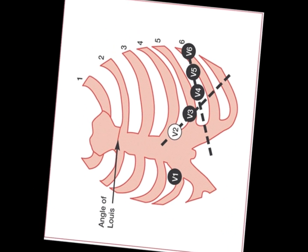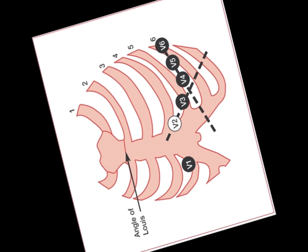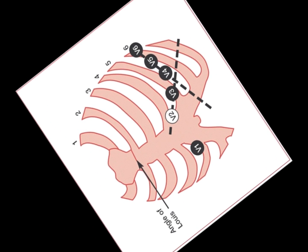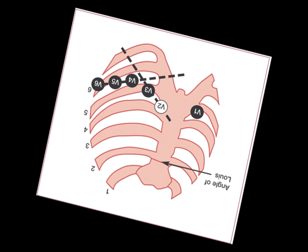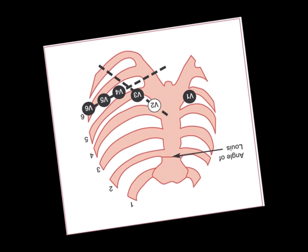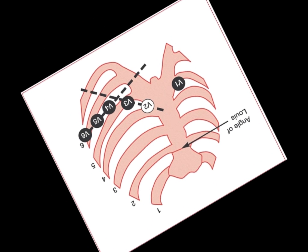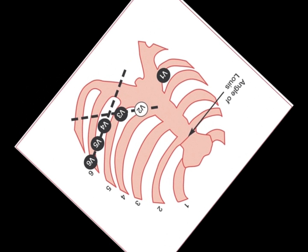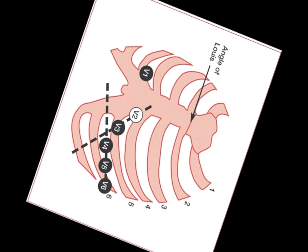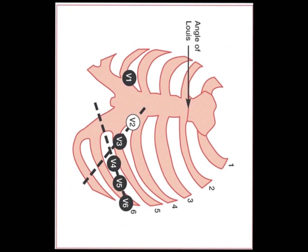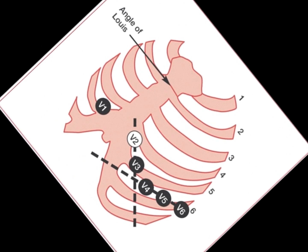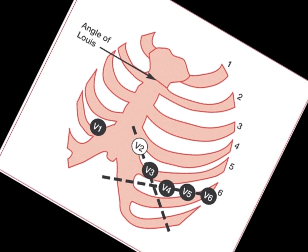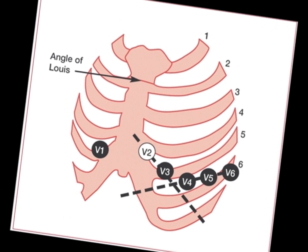V5 is placed at the left anterior axillary line, at the same level as V4, and views the lateral aspect of the left ventricle. V6 is placed at the left midaxillary line, at the same level as V4, and also looks at the lateral surface of the left ventricle.